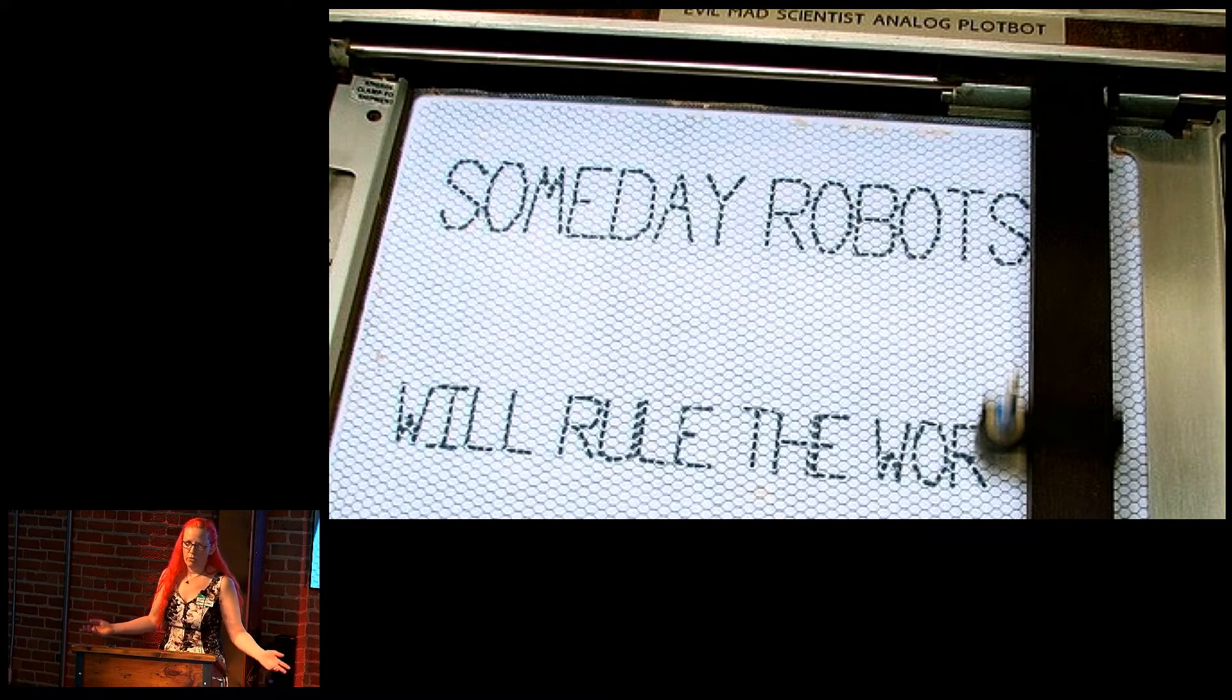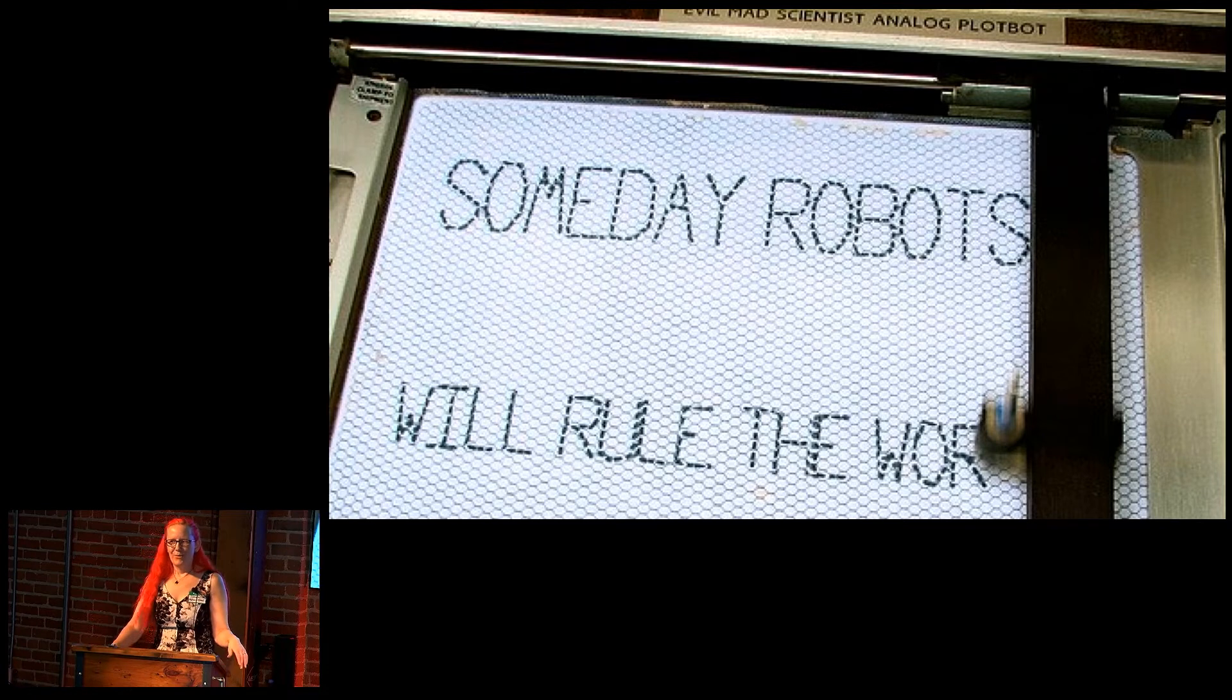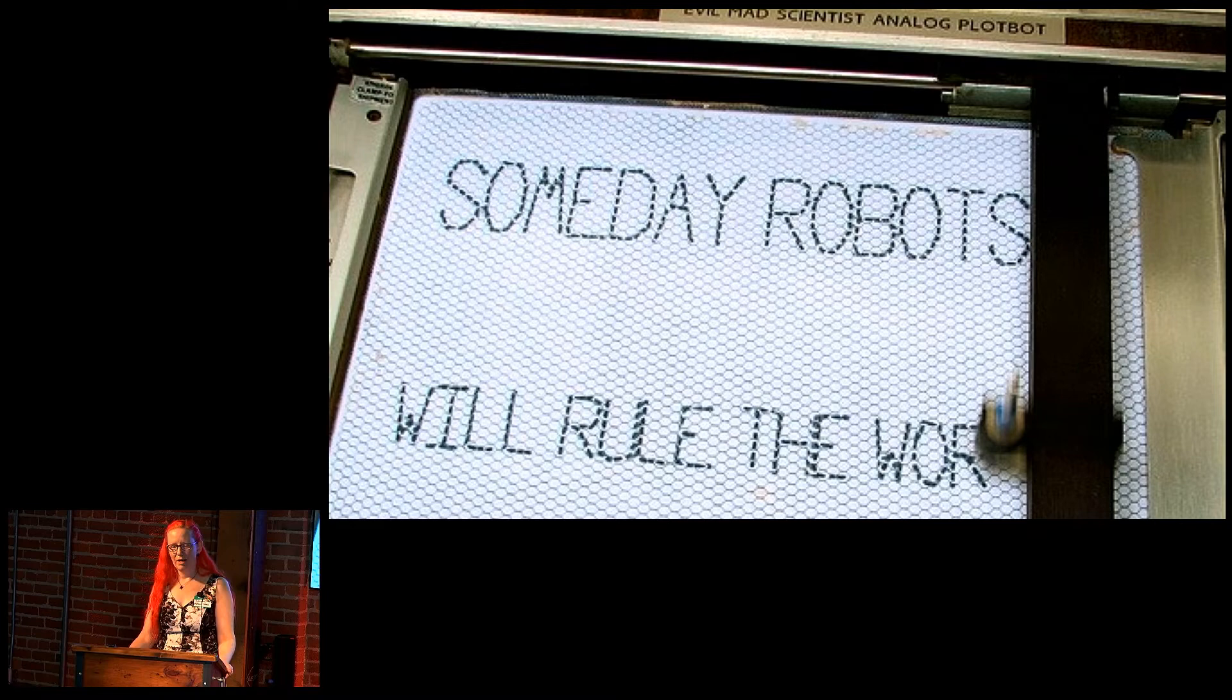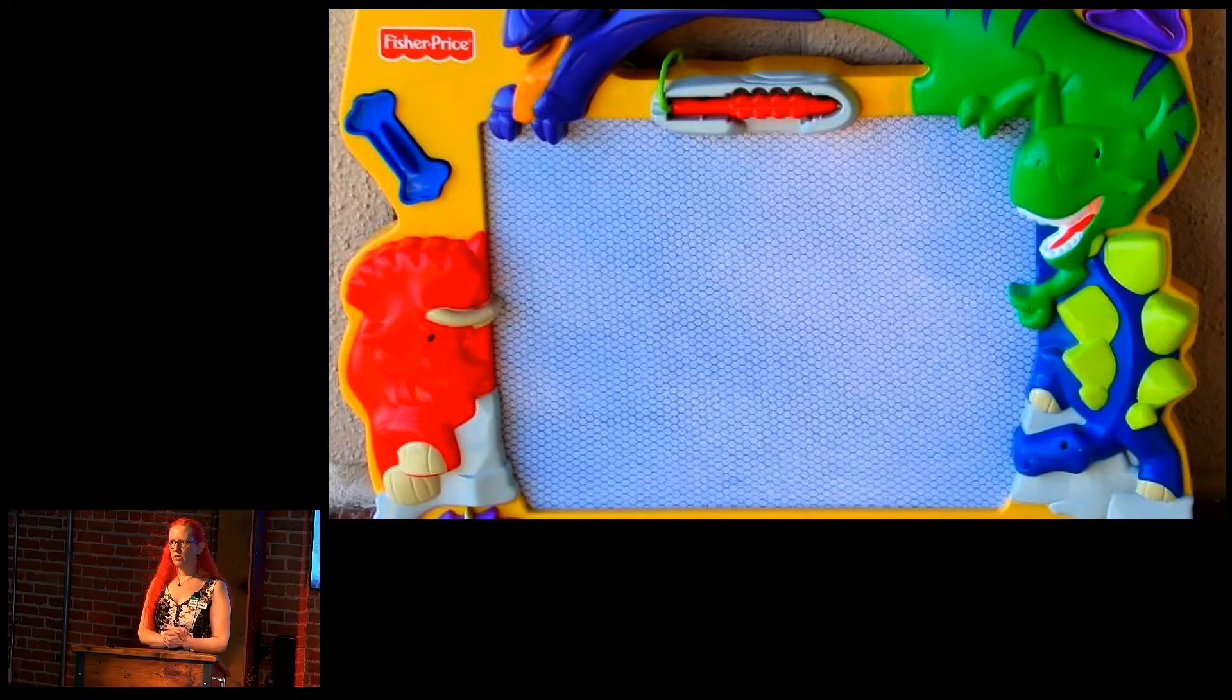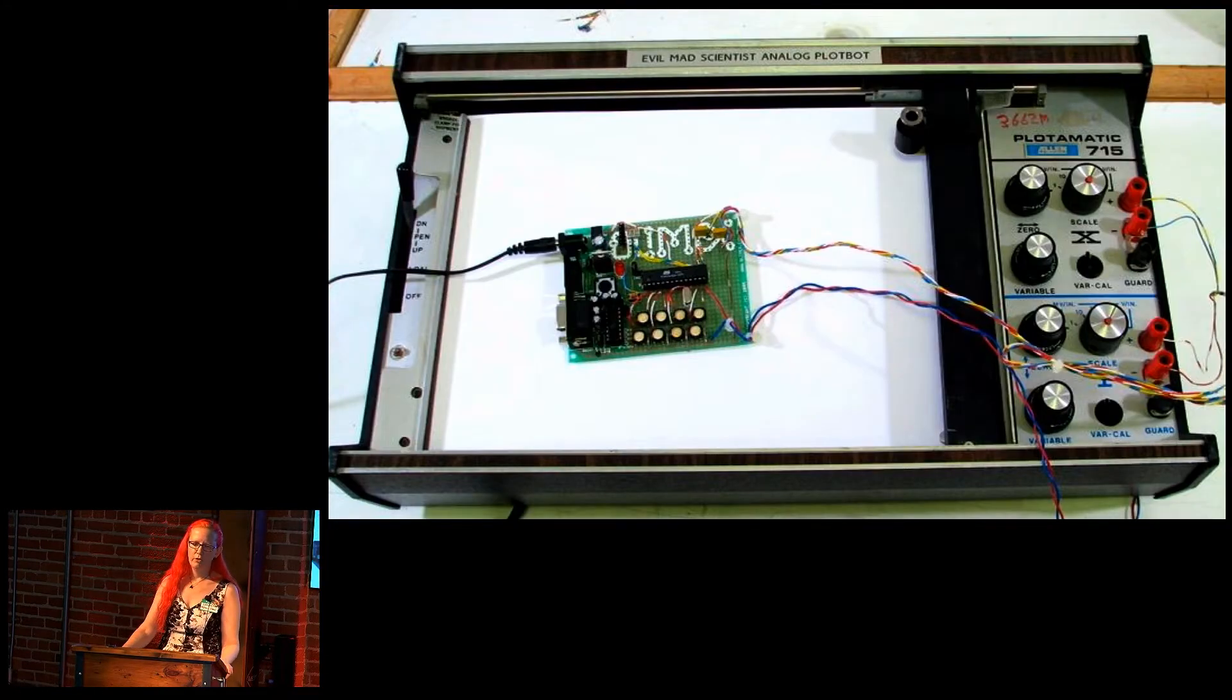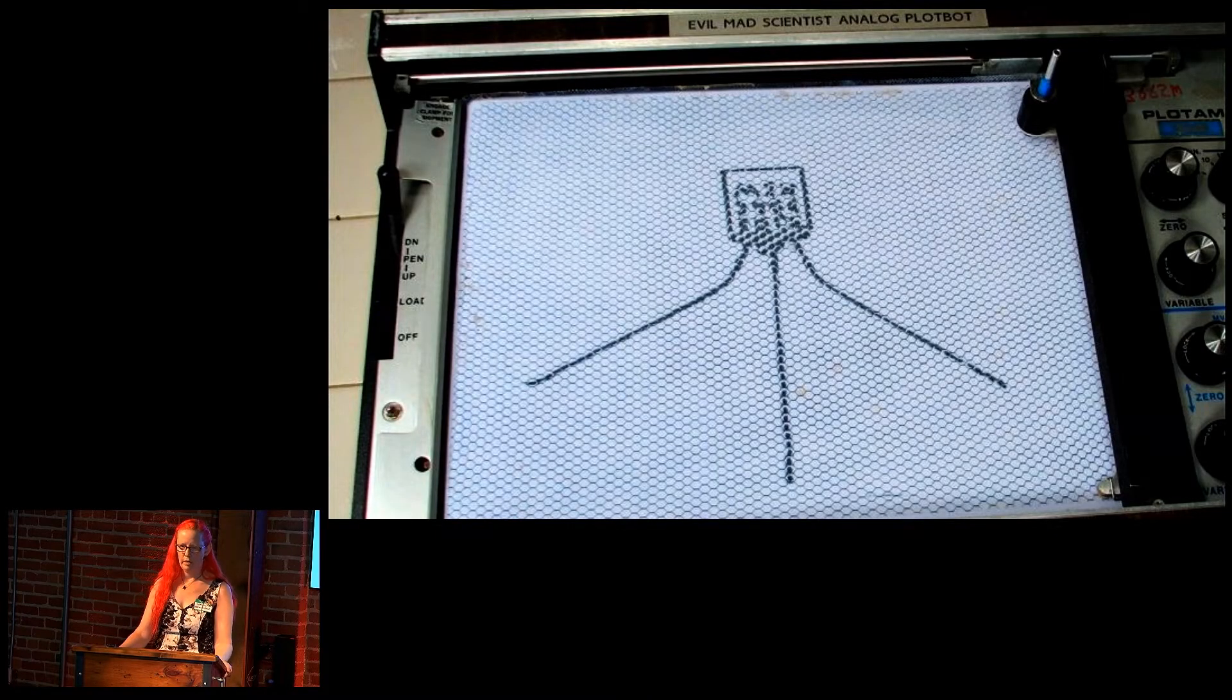And many of those projects involved plotters. So one of our first plotter hacking projects was the analog plot bot shown here. We hacked it with an e-ink screen that we used. We call it e-ink because it has all of the features that we expect. It's flexible. It's daylight-readable. It doesn't require power for a display. That's because we harvested it from a Magna-Doodle and hooked it up to a microcontroller to store images that we could plot with the plot bot.